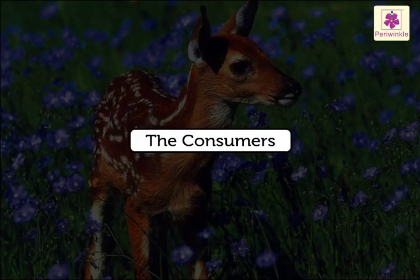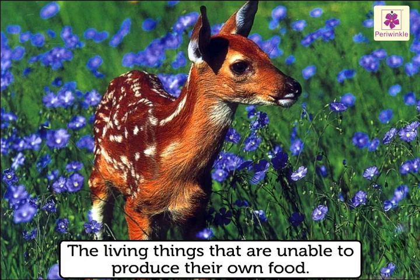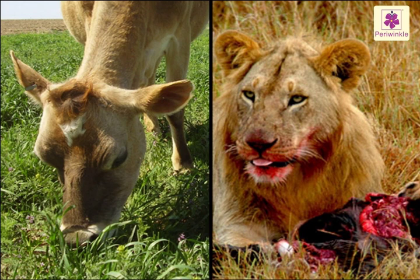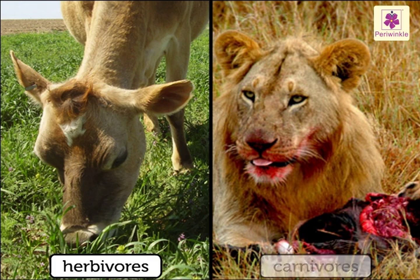The Consumers: These are the living things that are unable to produce their own food. They eat other living things and depend upon plants either directly or indirectly. There are two types of consumers: the herbivores and the carnivores.